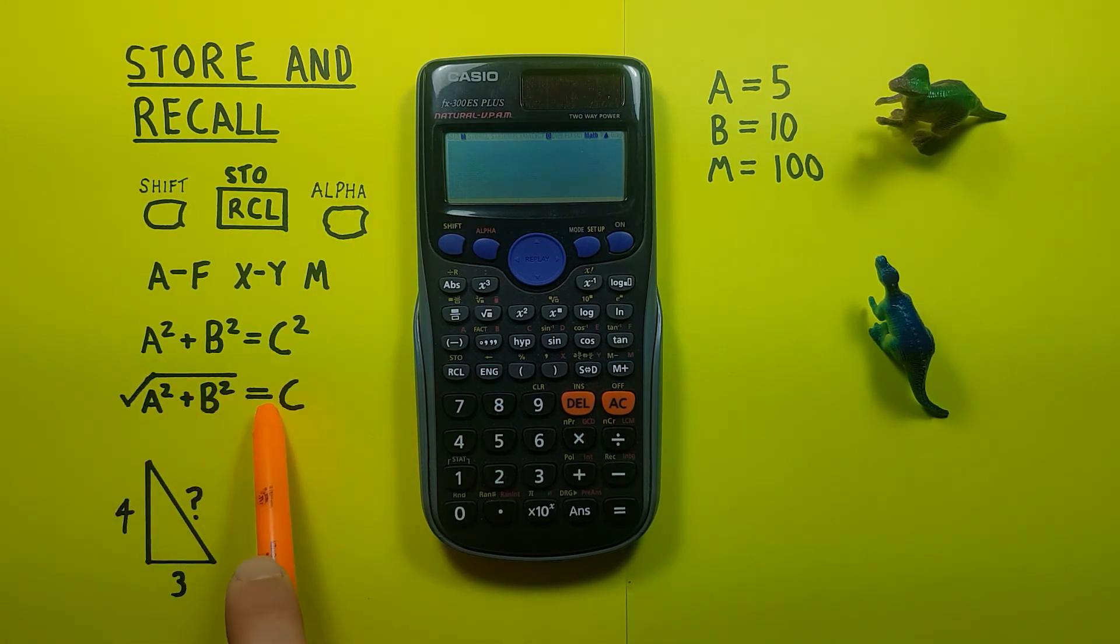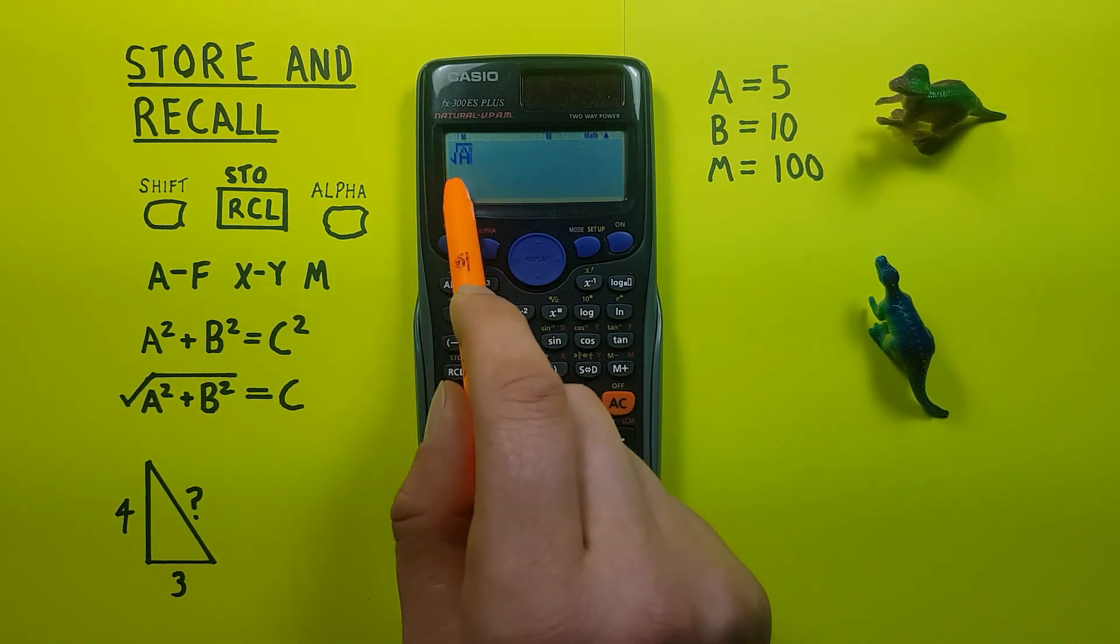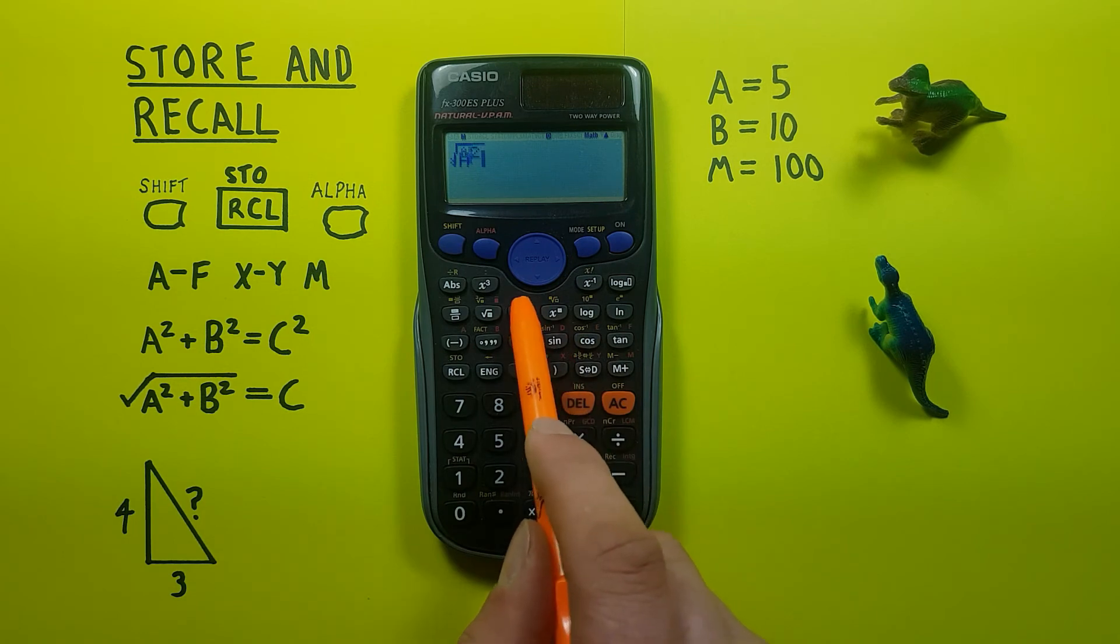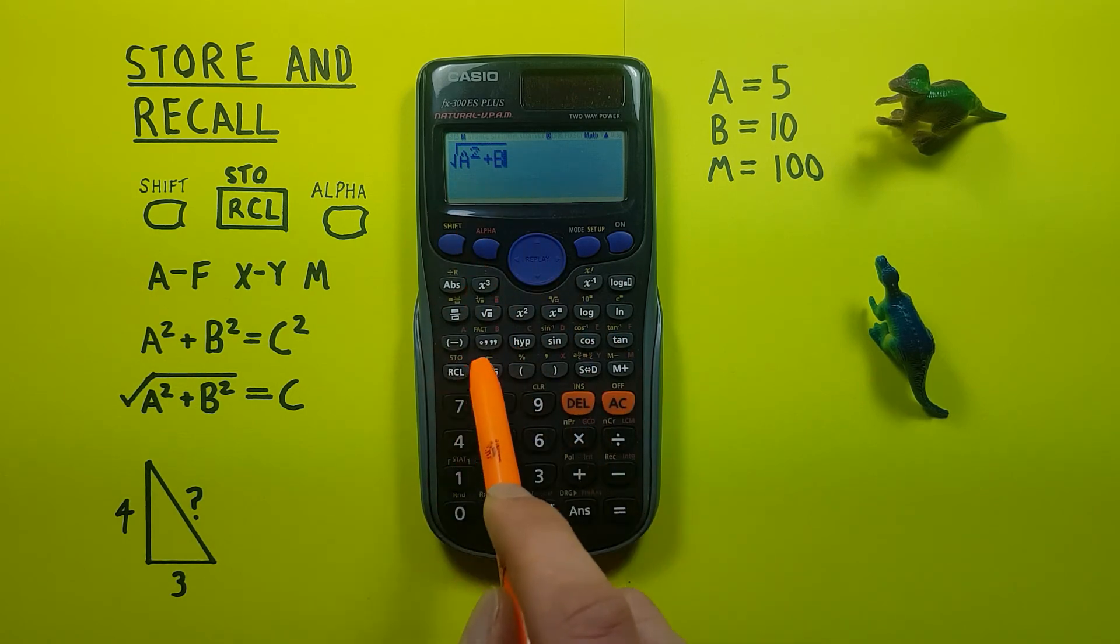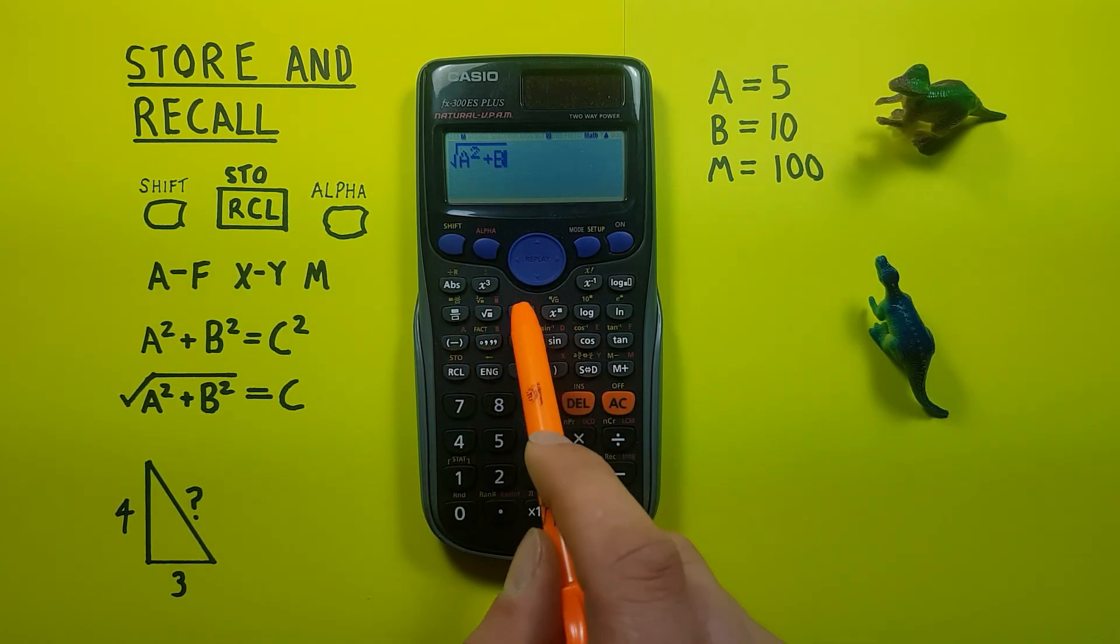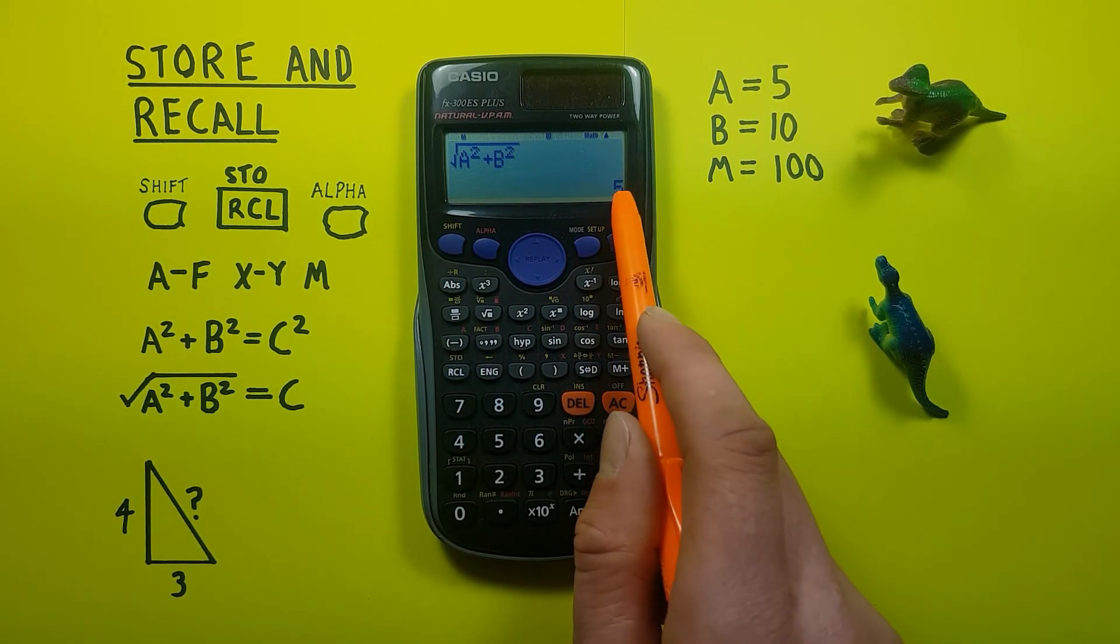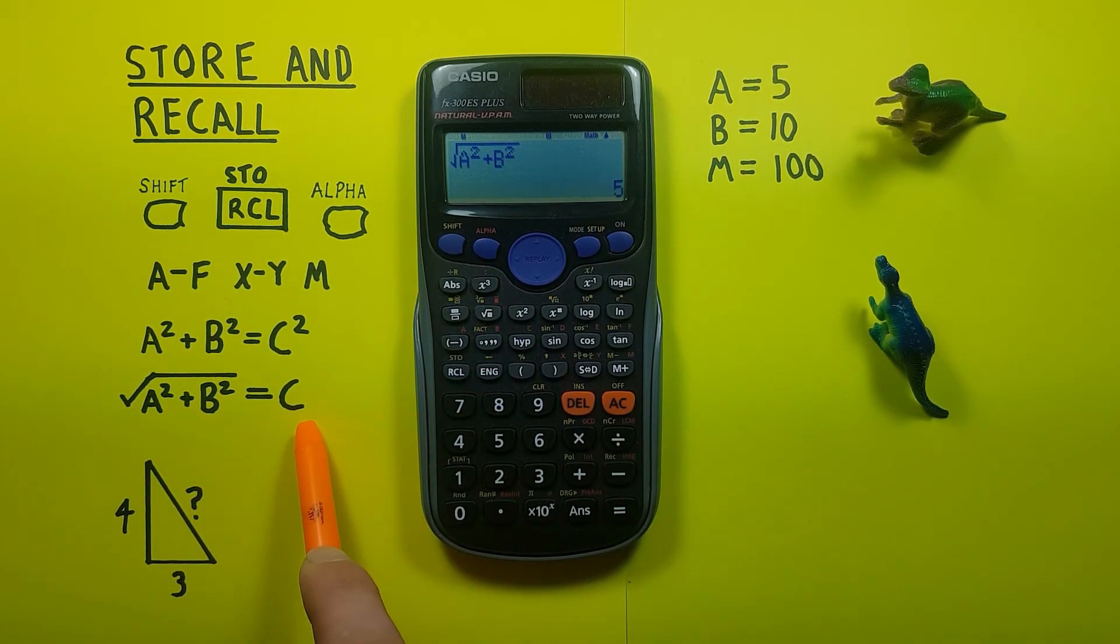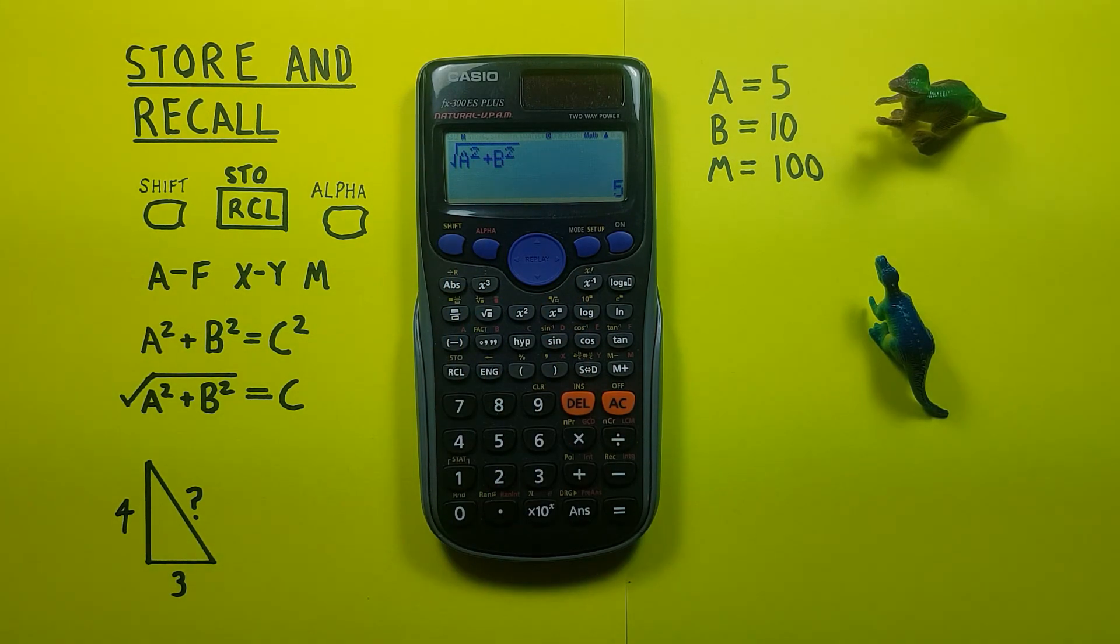Now we can enter these into a formula to easily solve for C. Let's do that and use this one here. So we know that it's square root of alpha A, there's our A there, squared, plus alpha B, we're using the alpha to use the letters of these keys, squared. All right, there's our formula, and if we press equals we see we get 5, which is the result, and that's our length of C. It really simplifies doing this calculation here.